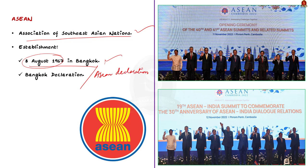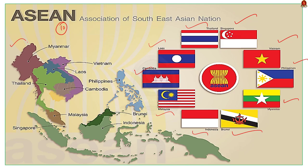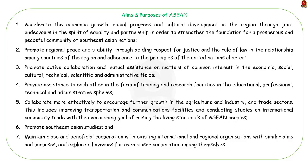ASEAN stands for Association of Southeast Asian Nations. It was established on 8th August 1967 in Bangkok, Thailand, with the signing of the ASEAN Declaration, also known as the Bangkok Declaration. It is a regional organization of 10 Southeast Asian and Pacific Rim countries: Singapore, Vietnam, Philippines, Myanmar, Brunei, Indonesia, Malaysia, Cambodia, Laos, and Thailand. ASEAN has aims and purposes as per the ASEAN Declaration — pause the video to go through them.